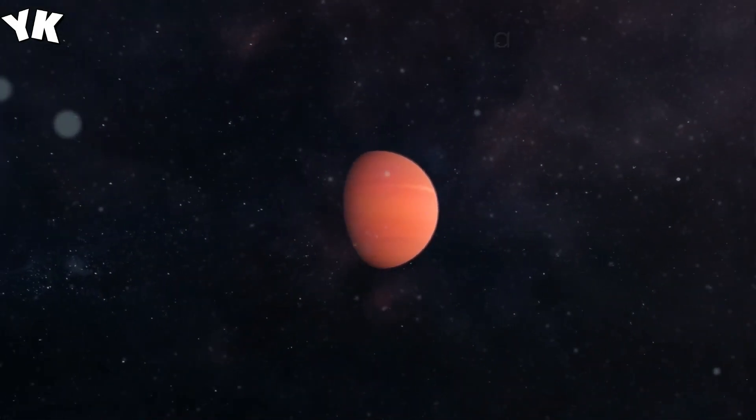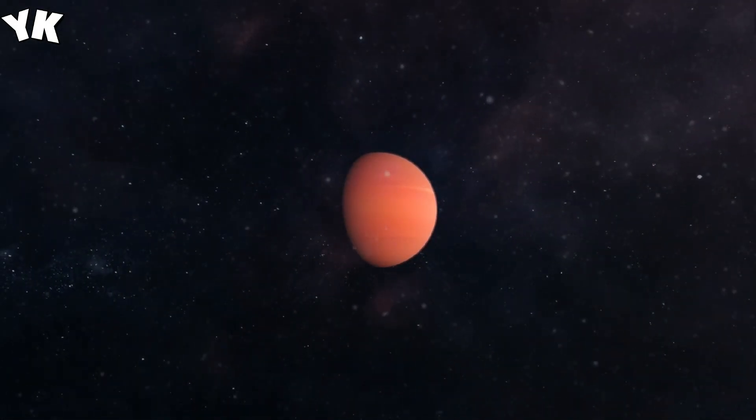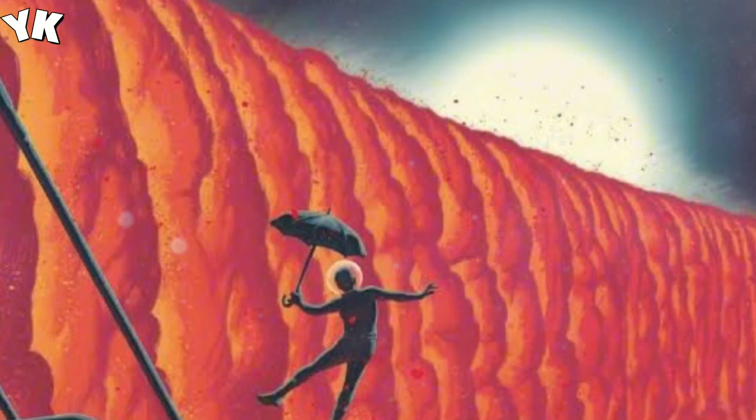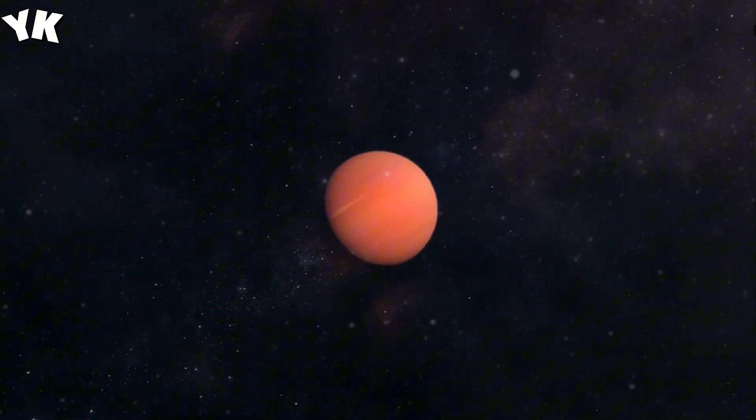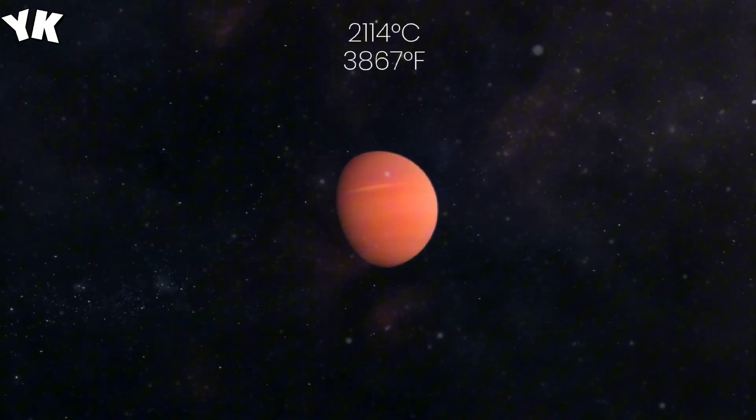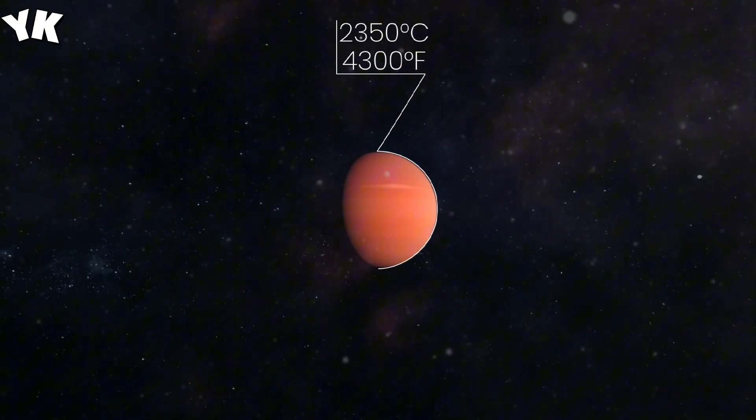Moving on to WASP-76B, an exoplanet with a permanent dark side and molten iron rains. Its dayside sizzles at 2,350 degrees Celsius, causing metals like iron to evaporate into the atmosphere. The extreme temperature difference gives rise to intense winds and iron precipitation.